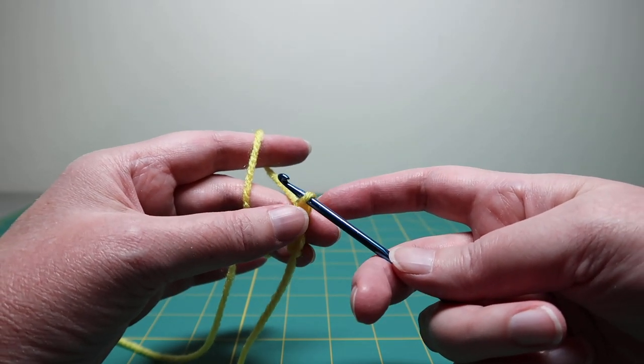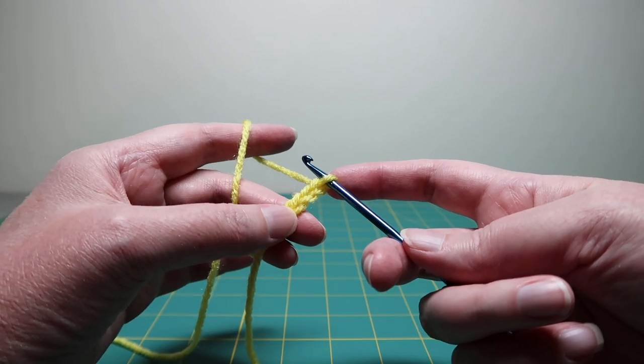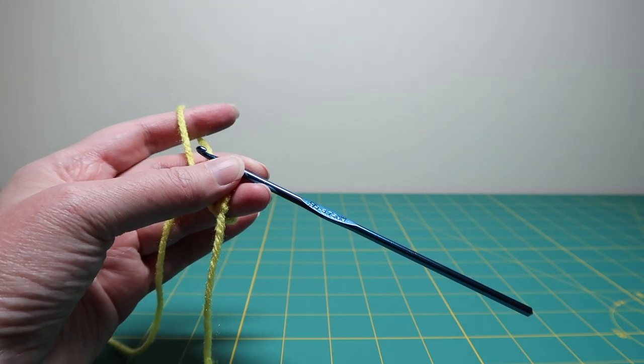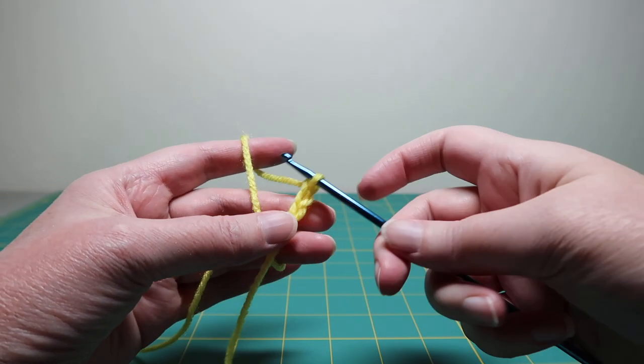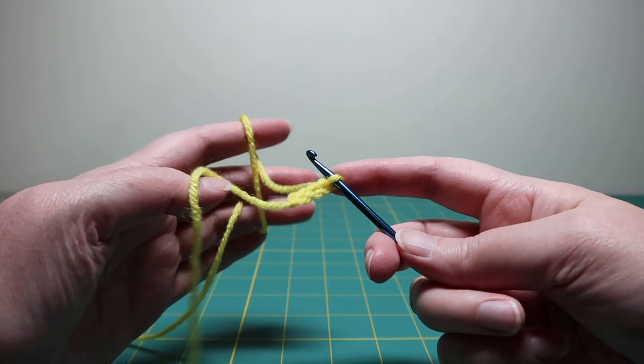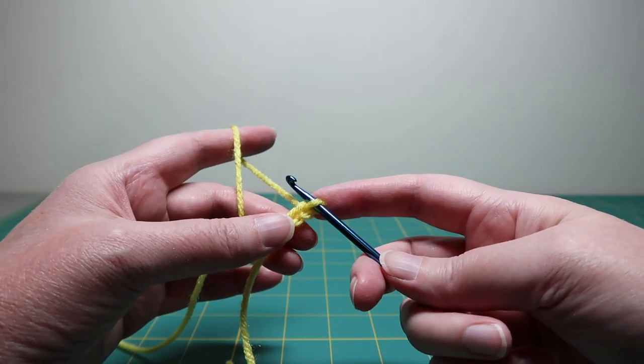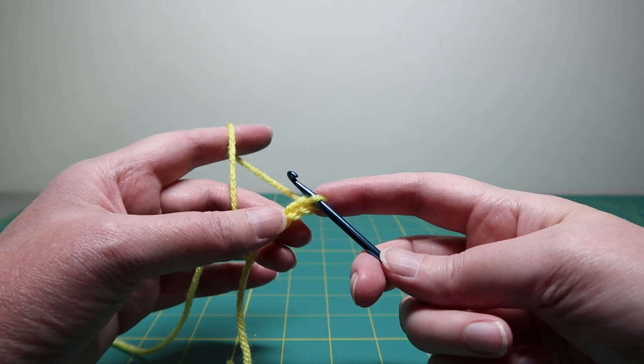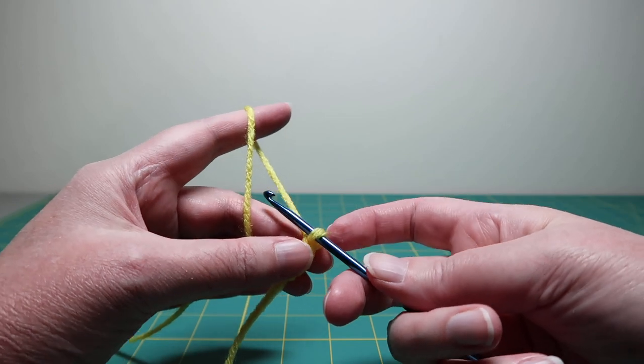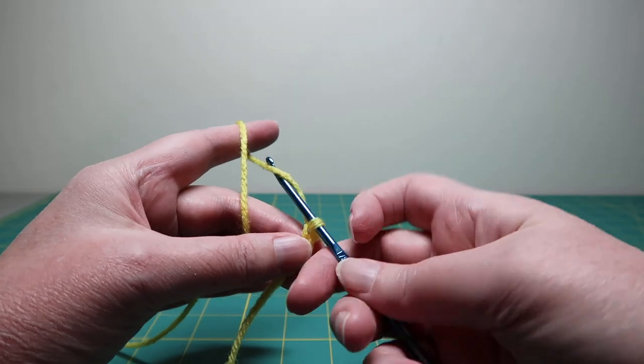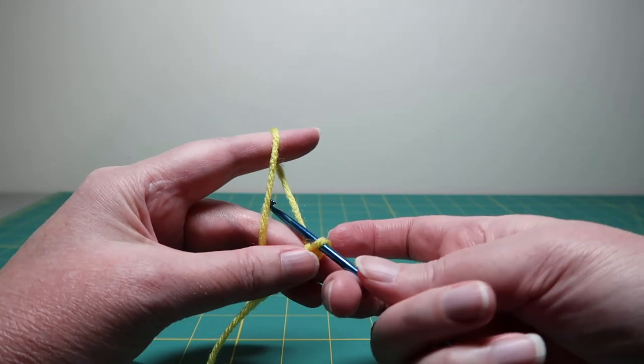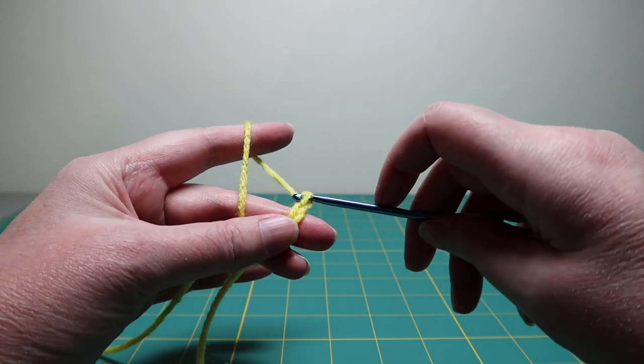Usually if you're using a pattern, it will tell you how many chain stitches to do. Or if you're just doing it without a pattern, just chain stitch it to the approximate length that you want. If you're going to be doing single crochets, make it a little bit shorter than you want. So I'll show that again. Yarn over, pull through the loop. Yarn over, pull through the loop.